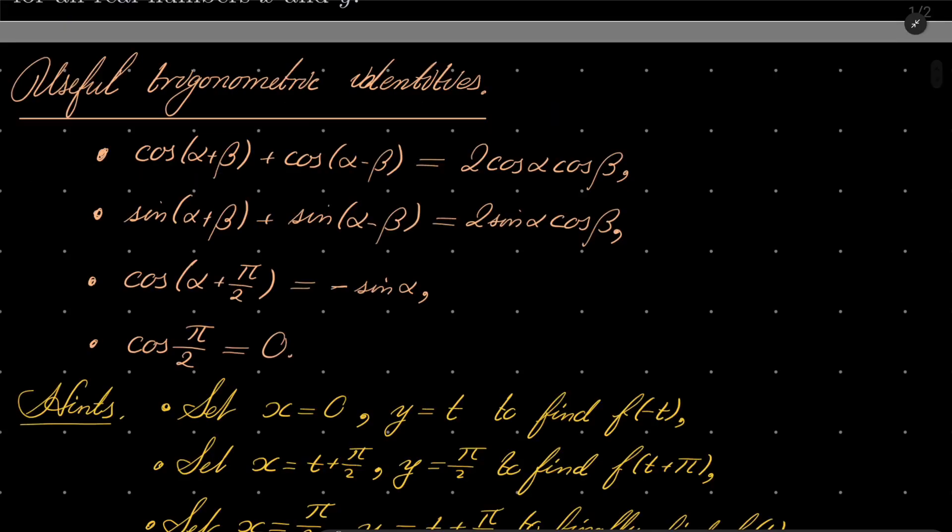Here are my hints. I have written here a couple of useful trigonometric identities which we will use. cos(α+β) + cos(α-β) = 2·cos(α)·cos(β). sin(α+β) + sin(α-β) = 2·sin(α)·cos(β). Next is a well-known reduction formula: cos(α + π/2) = -sin(α), and finally cos(π/2) = 0.